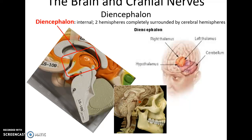The diencephalon is an internal structure only visible if you dissect the brain, preferably by a midsagittal dissection. It has two hemispheres completely covered by the cerebral hemispheres. Here is a view of it in a natural brain.